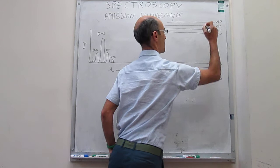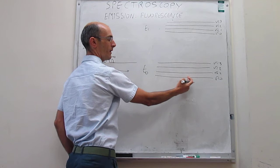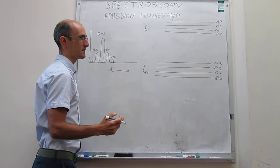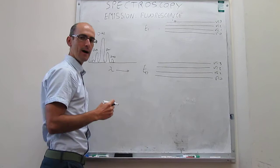In absorption spectroscopy, from the Franck-Condon principle, we can detect what wavelengths of photons are needed to excite the system from a particular vibrational and electronic state to a particular electronic and vibrational state. Now the system is in the excited state. Let's assume, for the sake of discussion, that the system ends up being in V3 — this is where our system is after absorbing a UV-Vis photon.